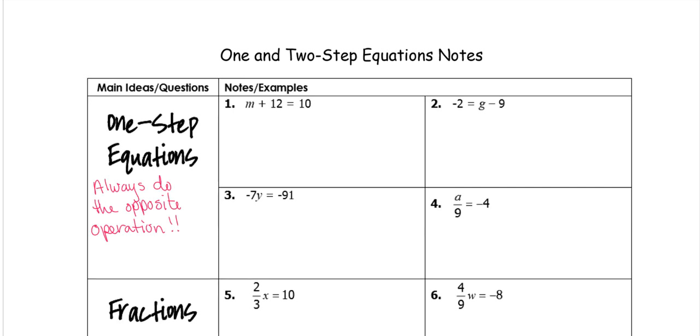So in this first problem, we are adding 12 to that M. So to make it go away from the M, you do the opposite, which is subtracting. And whatever you do to one side, you always do the other. But if you're kind of confused about the side, your equals always splits up your sides. So we have to subtract 12 on this side as well.